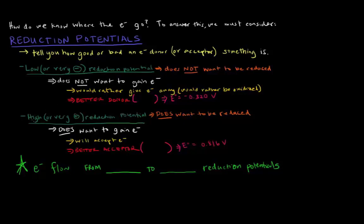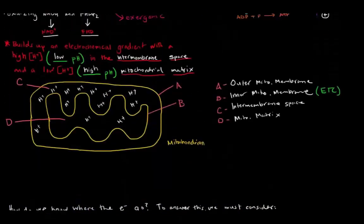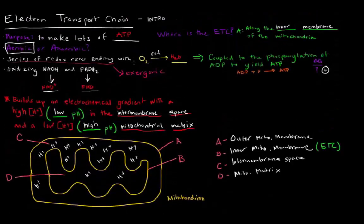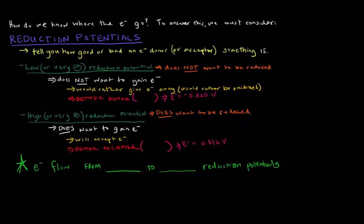A high or very positive reduction potential indicates that that thing wants to be reduced — it wants to gain electrons, so it will accept electrons from something else. This makes it a better acceptor. We know that the electron transport chain ends with oxygen being reduced to water, so if oxygen is the last thing in the chain to be reduced, it's going to be a very good acceptor with a high reduction potential.